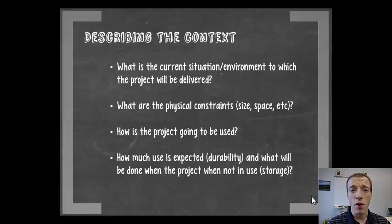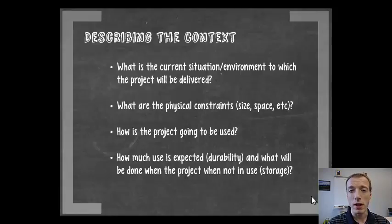Another thing to consider is: what are the physical constraints? How heavy can it be? How light can you make it? How big is it allowed to be, or small? A good example would be a bookshelf that we designed for the Disability Resource Center several years ago that ended up being too big for the space it was supposed to be used in, so they weren't able to actually get it in the room where it was to be delivered. That was a failure of specifications.